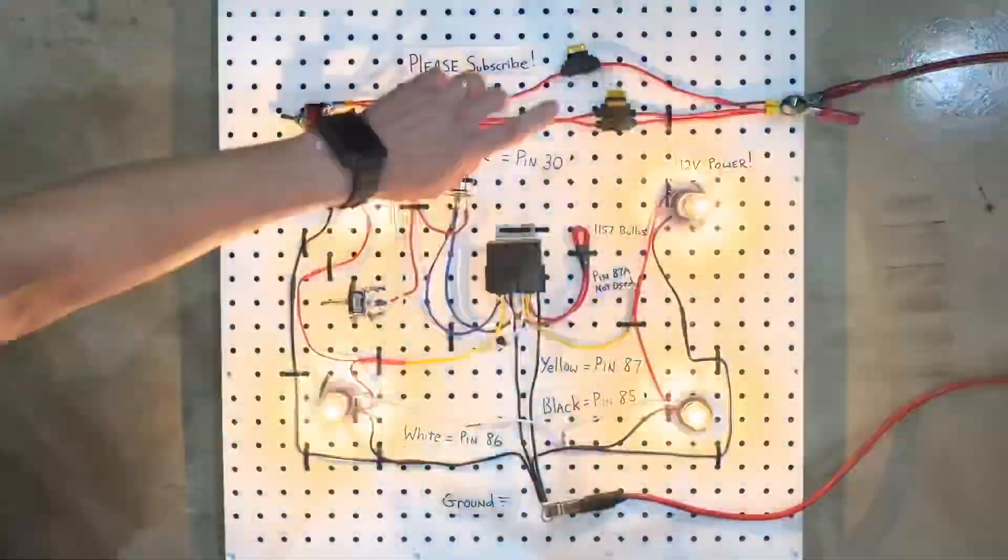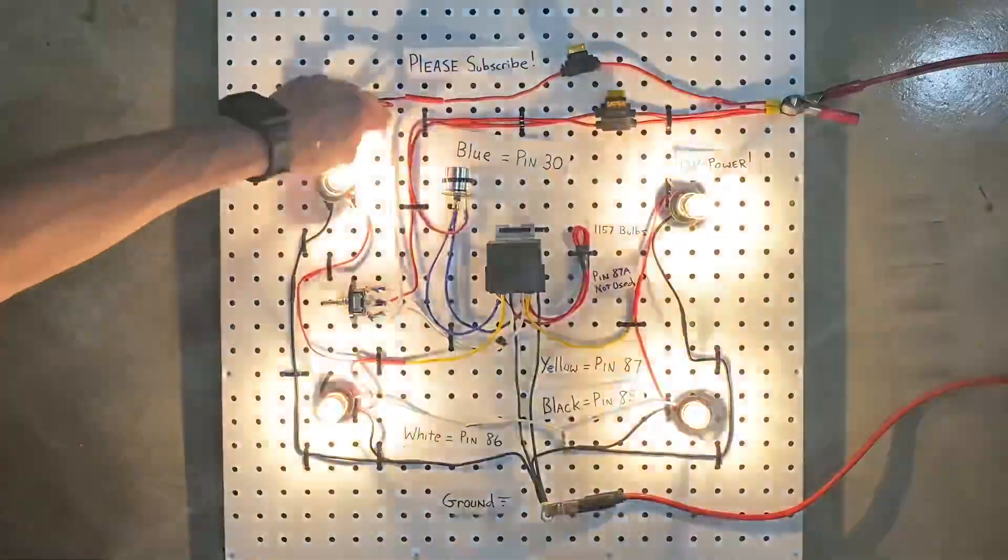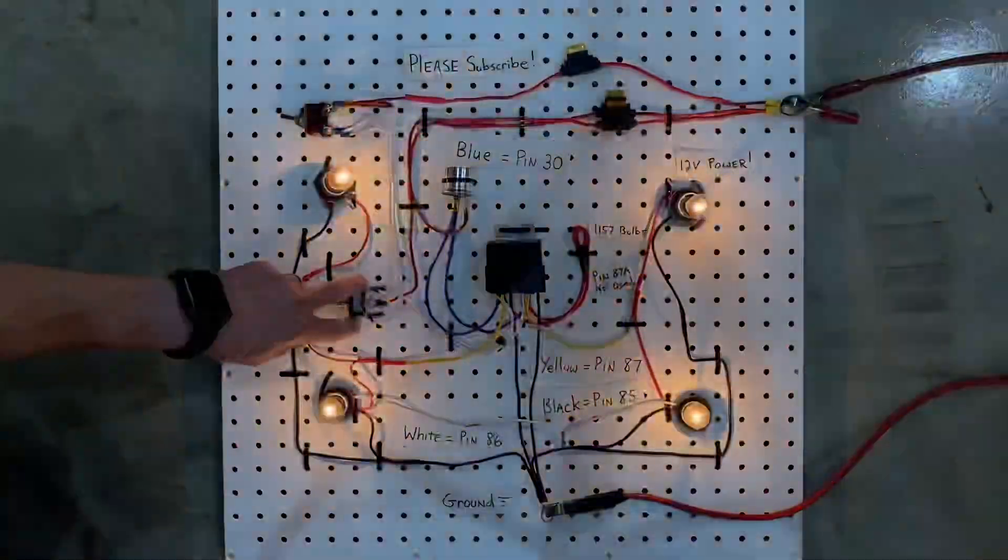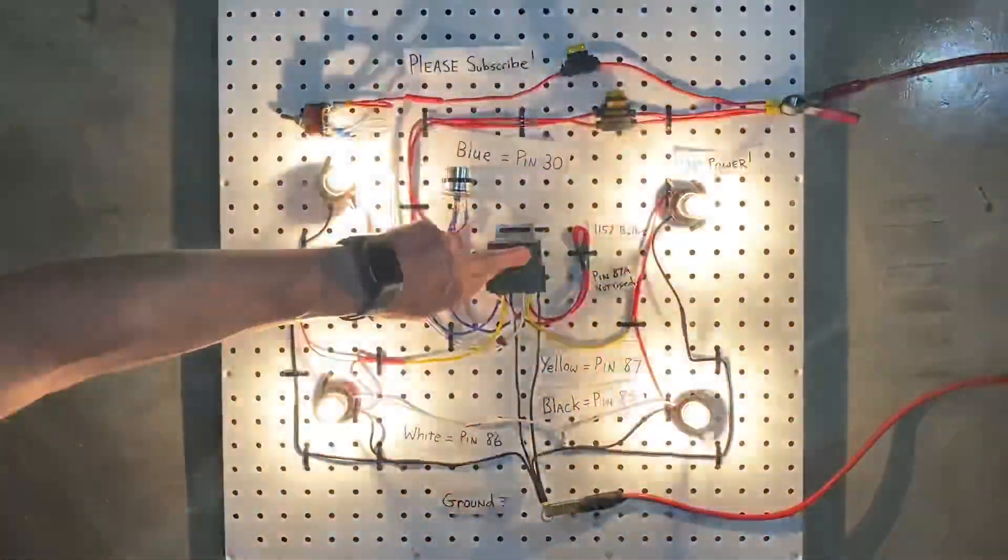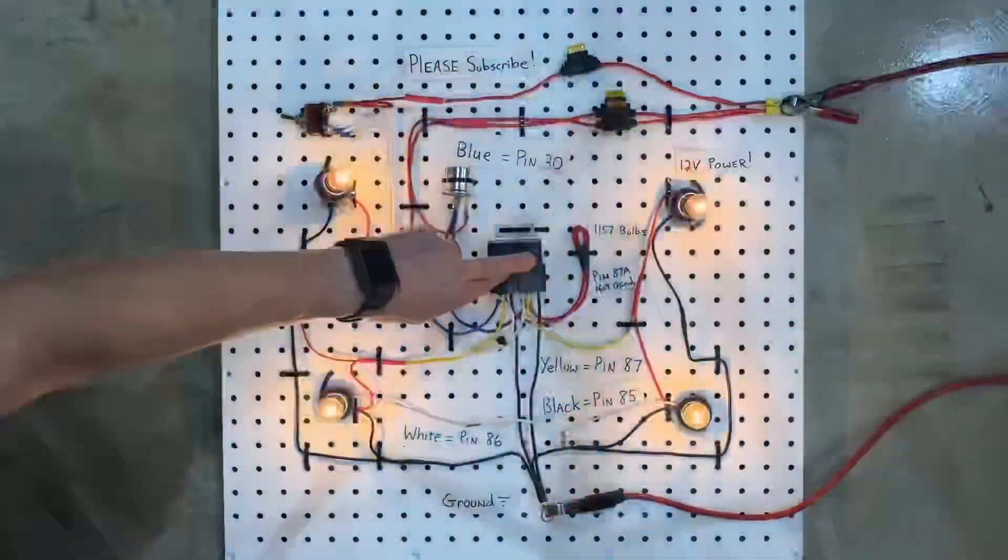So, now, power's coming in, power's coming out of the two white wires, and then it's jumping right over here to both sides of the relay, or both relays, and it's telling the relays to turn on.